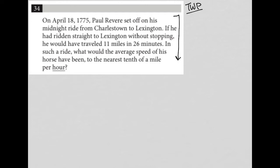So I'm going to make a little chart here and say C to L for Charlestown to Lexington. We're told if you just go straight there, that this is 11 miles, so that's the distance, and that it would have taken him 26 minutes. So with that information, we could definitely find the actual speed.